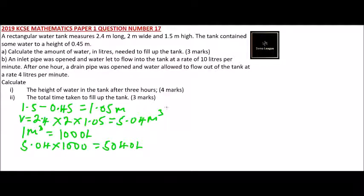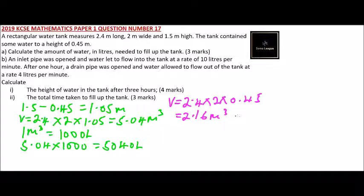We calculate the initial volume: Volume = 2.4 × 2 × 0.45. Using your calculator, you should get 2.16 meters cubed, which you convert to liters by multiplying by 1000, giving 2160 liters. That is the water that was in the tank at the start.